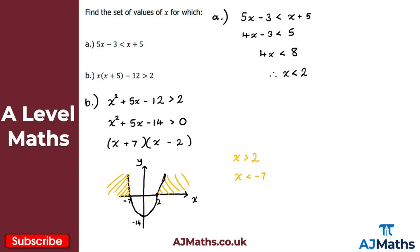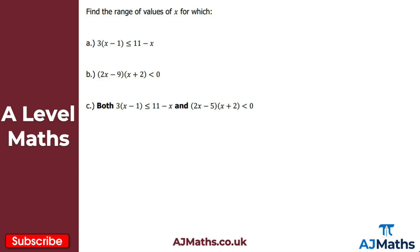That's the solution to part b. Now let's look at the next question, split into three parts. Part a again has a simple linear inequality. First, I'll expand the bracket, giving 3x - 3 ≤ 11 - x.